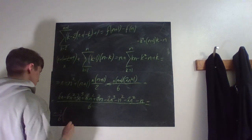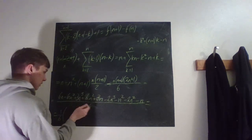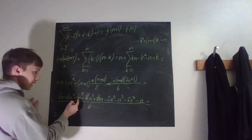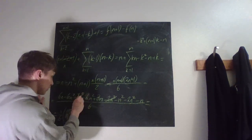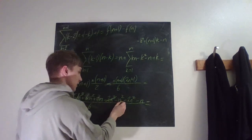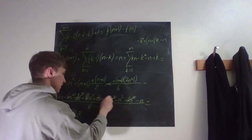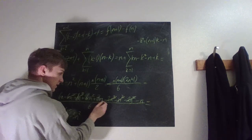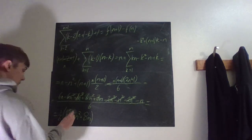Collecting terms over 6: the n³ terms give 3n³ minus 2n³ equals n³. The n² terms: minus 6 plus 6 cancel, leaving minus 3n². The linear terms: 6n plus 3n gives 9n minus 1n equals 8n. So the result is (1/6)(n³ minus 3n² plus 8n), a third-degree polynomial.